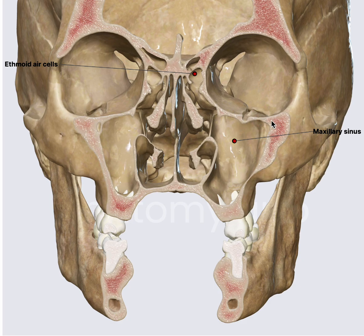The roof of the maxillary sinus is formed by the orbit. Here you will have the ostiomeatal complex. We will go into details in further videos.